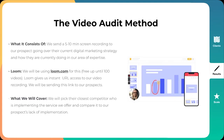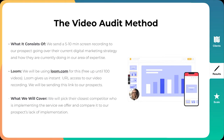One method I want to go over in particular is the video audit method. What it consists of is sending a five to ten minute screen recording to your prospect going over their current digital marketing strategy and how they're doing in your area of expertise. If you're offering Instagram growth, you look at their Instagram; if you're offering Facebook ads, you look at their Facebook ad library. We'll be using Loom.com, which is completely free up to 100 videos and gives you instant URL access to your video recording to share with prospects. Finally, we pick the closest competitor implementing the service we offer and compare it to our prospect's lack of implementation.